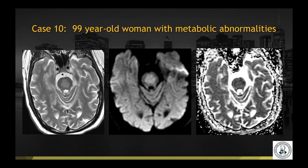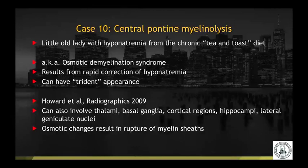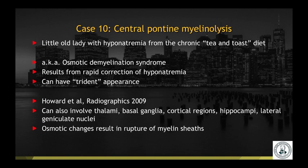Case number ten: a 99-year-old woman with metabolic abnormalities. T2 hyperintensity and reduced diffusion are seen in the central pons. This was a case of central pontine myelinolysis, otherwise known as osmotic demyelination syndrome. This classic presentation resulted from hyponatremia from a chronic TNTOS diet, and it can result from rapid correction of hyponatremia. It typically has this classic trident appearance.